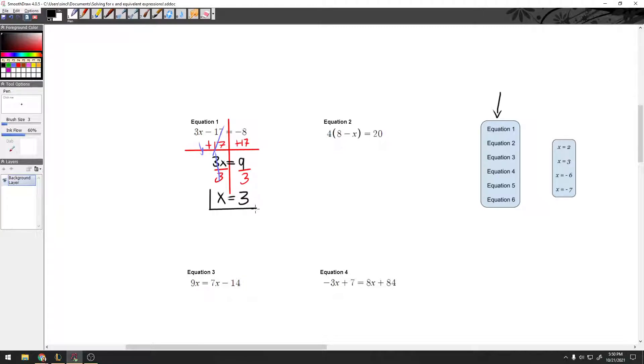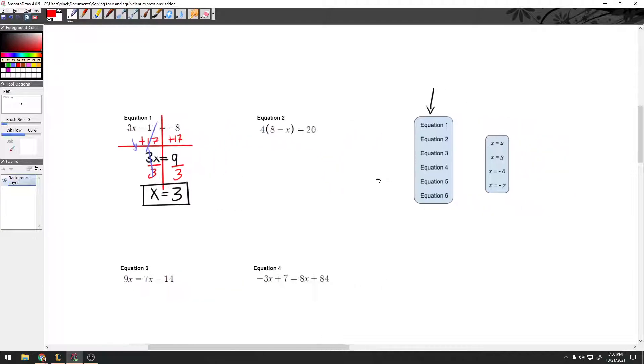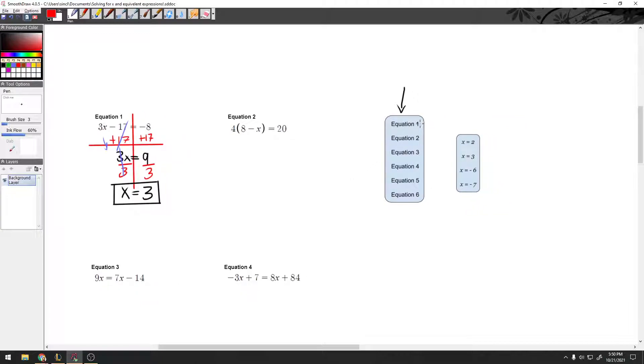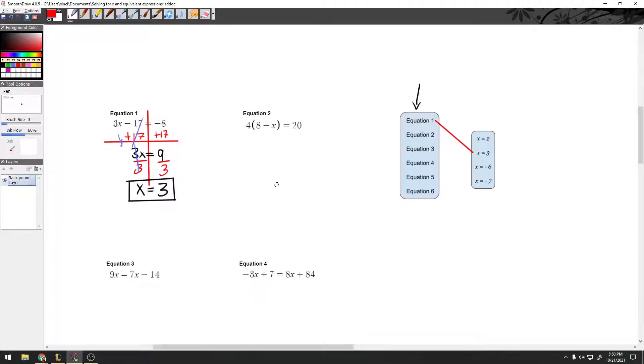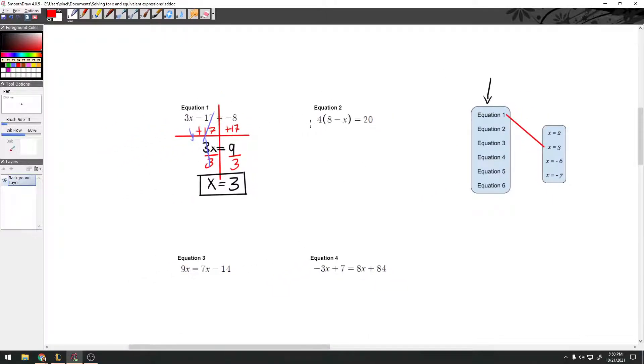So my first answer here is x equals 3, and I'm going to go ahead and put that on my equation tracker here. So I'm going to take equation 1, x equals 3. Alright, let's go on to equation 2 here, so draw our balance beam.